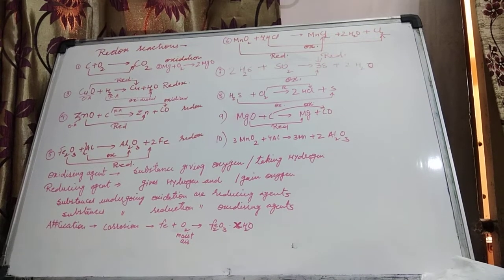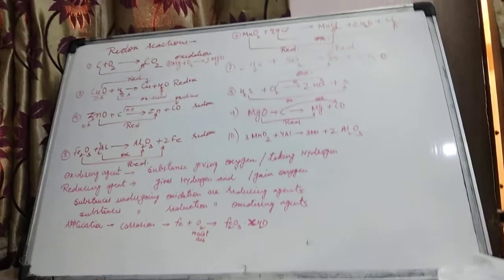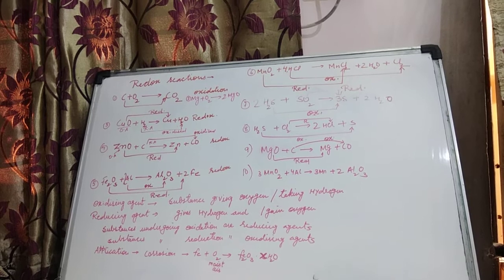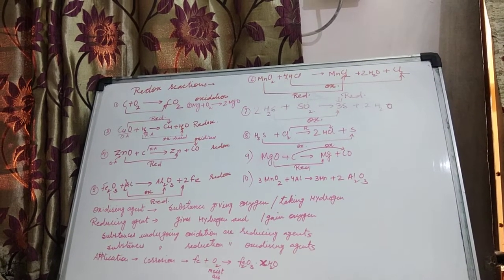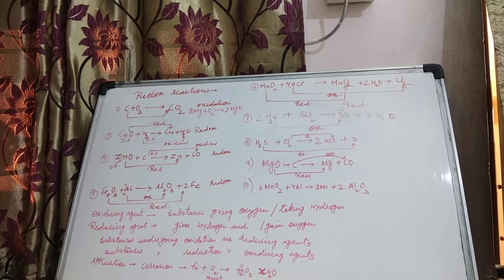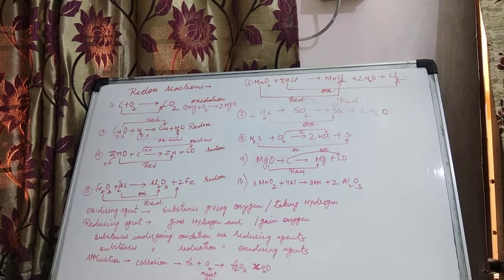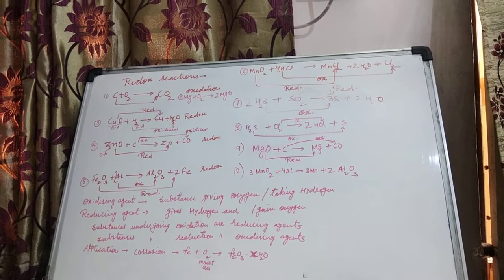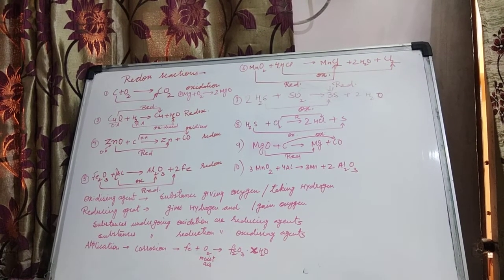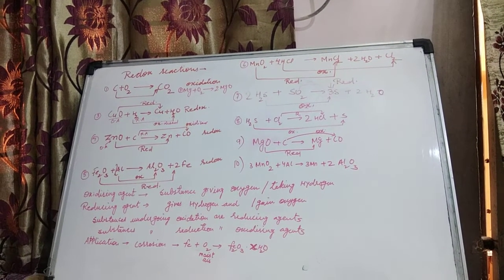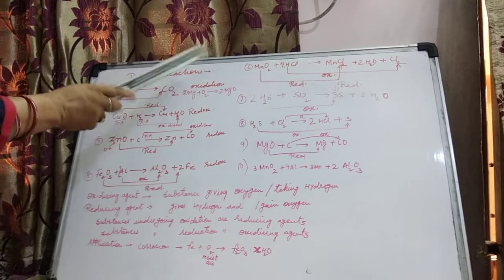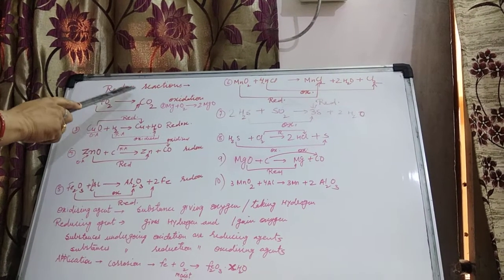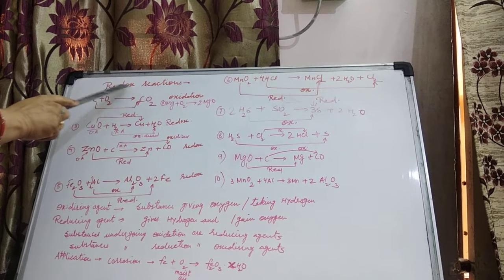Hello friends. We were doing Redox Reactions, and the definitions we have taken are in terms of Oxygen and Hydrogen. In terms of Oxygen, Oxidation is the addition of Oxygen and Reduction is the removal of Oxygen. Similarly, in terms of Hydrogen, removal of Hydrogen is Oxidation and addition of Hydrogen is Reduction. Redox means when Oxidation and Reduction both take place simultaneously.